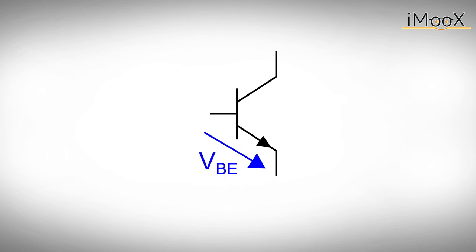The basic idea is to use the base emitter voltage of a bipolar transistor as a constant reference voltage. Unfortunately, the base emitter voltage depends on temperature and changes about minus 2 millivolts per Kelvin. But if we add a voltage with a positive temperature coefficient, we can use it to compensate.